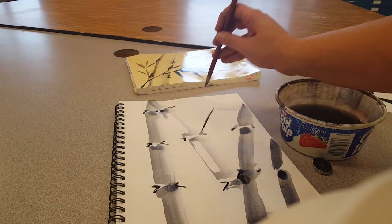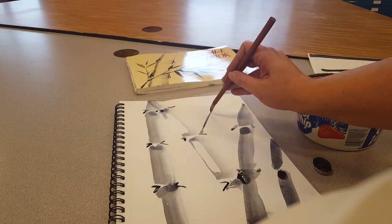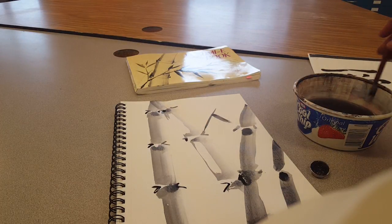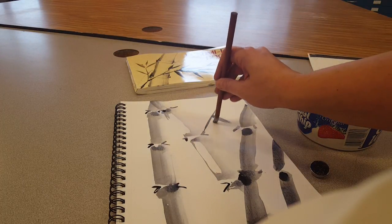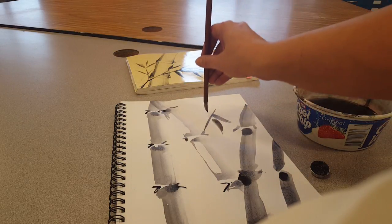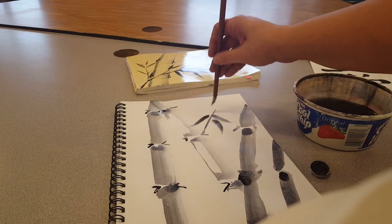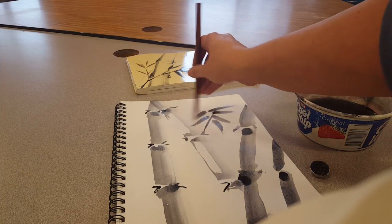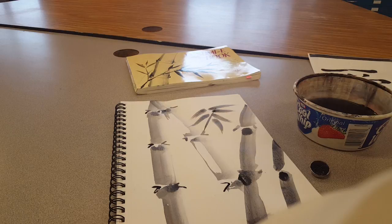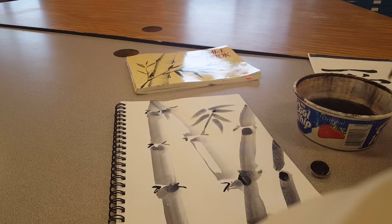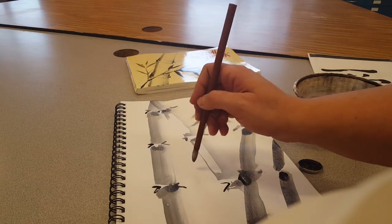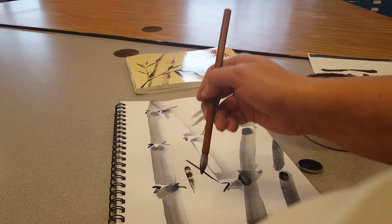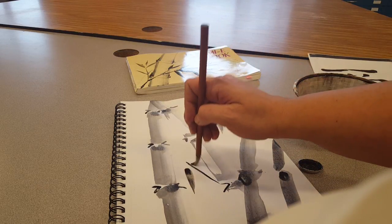Create little stems, and to create the bamboo leaves, I want to press and swipe, making that nice point. Press and swipe, press and swipe. That creates a nice little bamboo leaf off the side. Maybe I'll do another little one right here. Press and swipe, swipe.